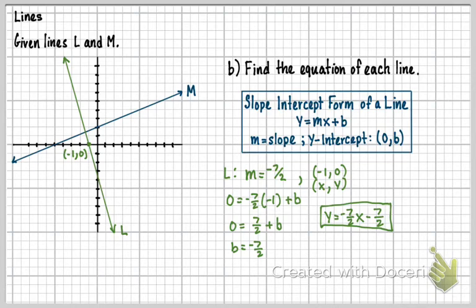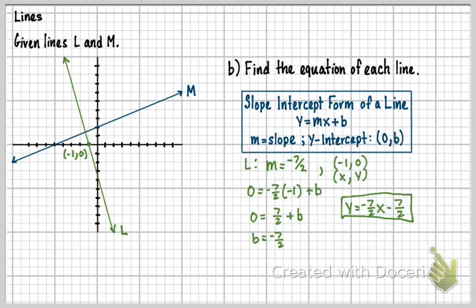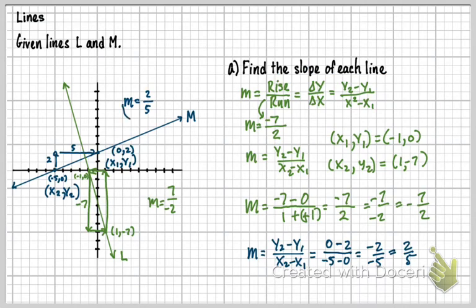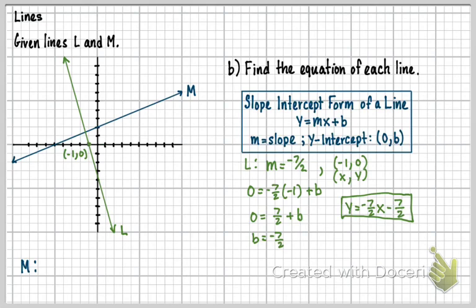So now let's find the other one, line M. Now for line M, I'm going to work across the bottom here and go over to the right. So I'm going to need that slope for that one, and we found that previously. That slope for that one was 2 fifths. So m equals 2 fifths.